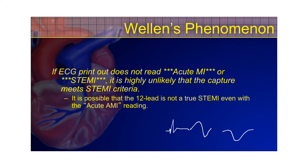If the ECG printout does not read acute MI or STEMI, it is highly unlikely the capture meets STEMI criteria, because most modern 12-lead ECG monitors have a lot of information input into their interpretive algorithm to identify even very subtle STEMIs. So if you have a clean tracing and it doesn't flag acute MI or STEMI, you're probably not looking at a STEMI — but there is still a chance. It is also possible that the 12-lead is not a true STEMI even with an acute MI reading, so it could over-diagnose a STEMI, especially with a poor tracing.